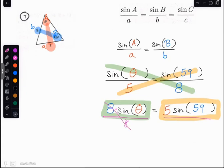I need to get rid of that 8. Whatever I do on one side, I do to the other. So I'm going to end up with sine of theta equals 5 times sine of 59 divided by 8.